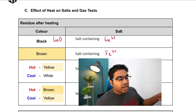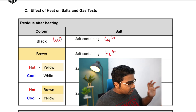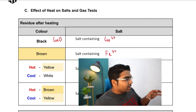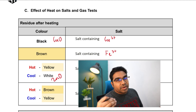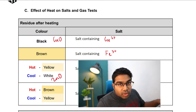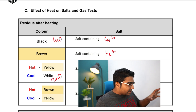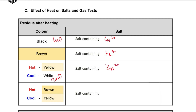If the residue while still hot is yellow but becomes white when cool, this indicates zinc oxide, ZnO, meaning the original salt contained Zn2+ ions. If the residue is brown when hot but yellow when cool, this indicates lead(II) oxide, PbO, meaning the original salt contained Pb2+ ions.